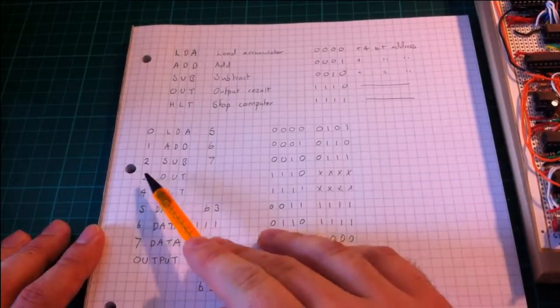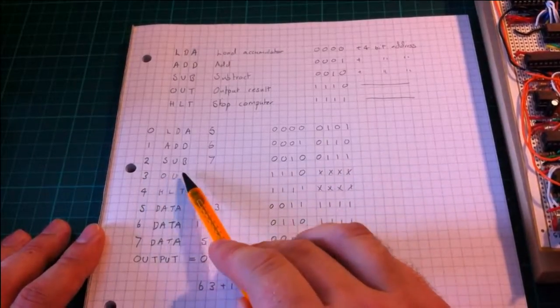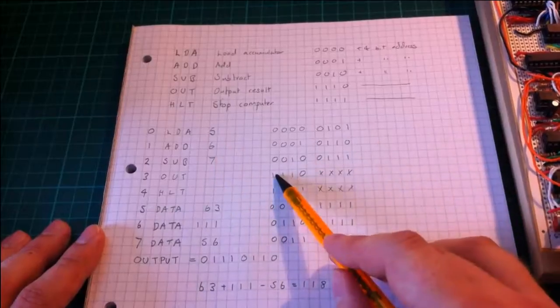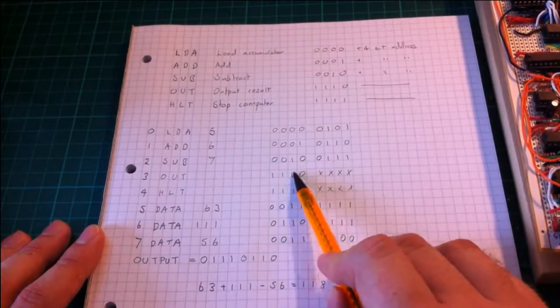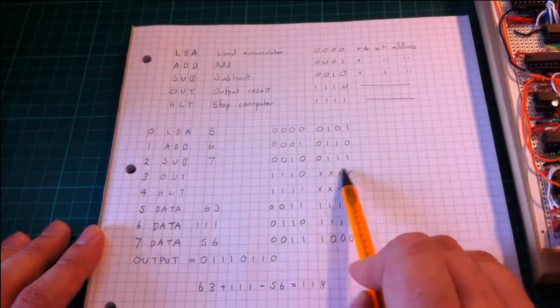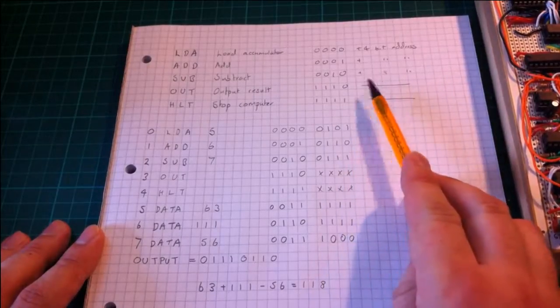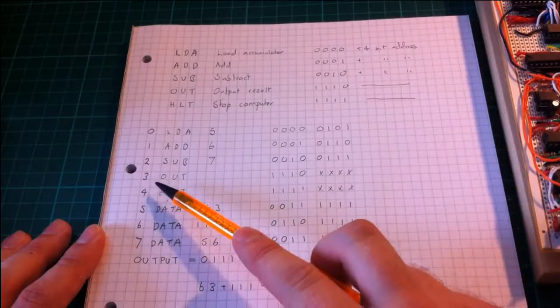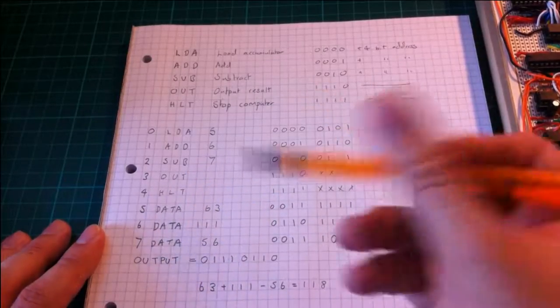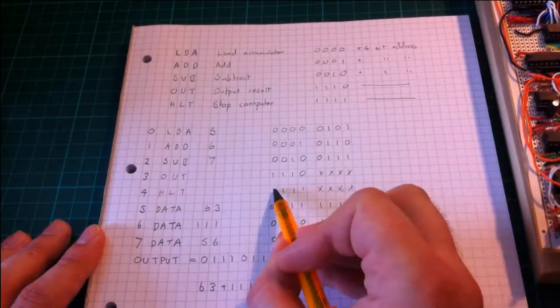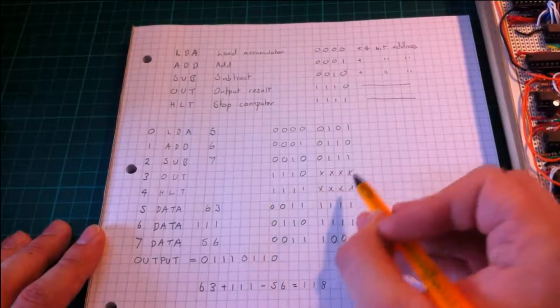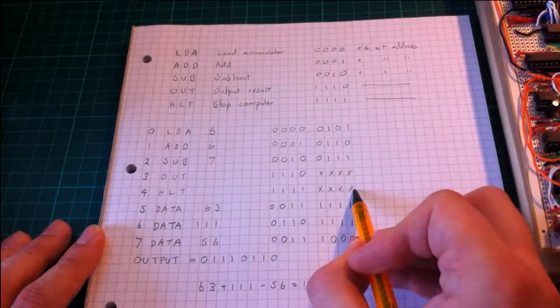The computer then moves to address 3, sees the command OUT with the opcode 1110, and the remaining bits don't matter because there is no address needed. Then at address 4 there is the fifth command HALT given by 1111, and again these are don't care because it doesn't need an address.